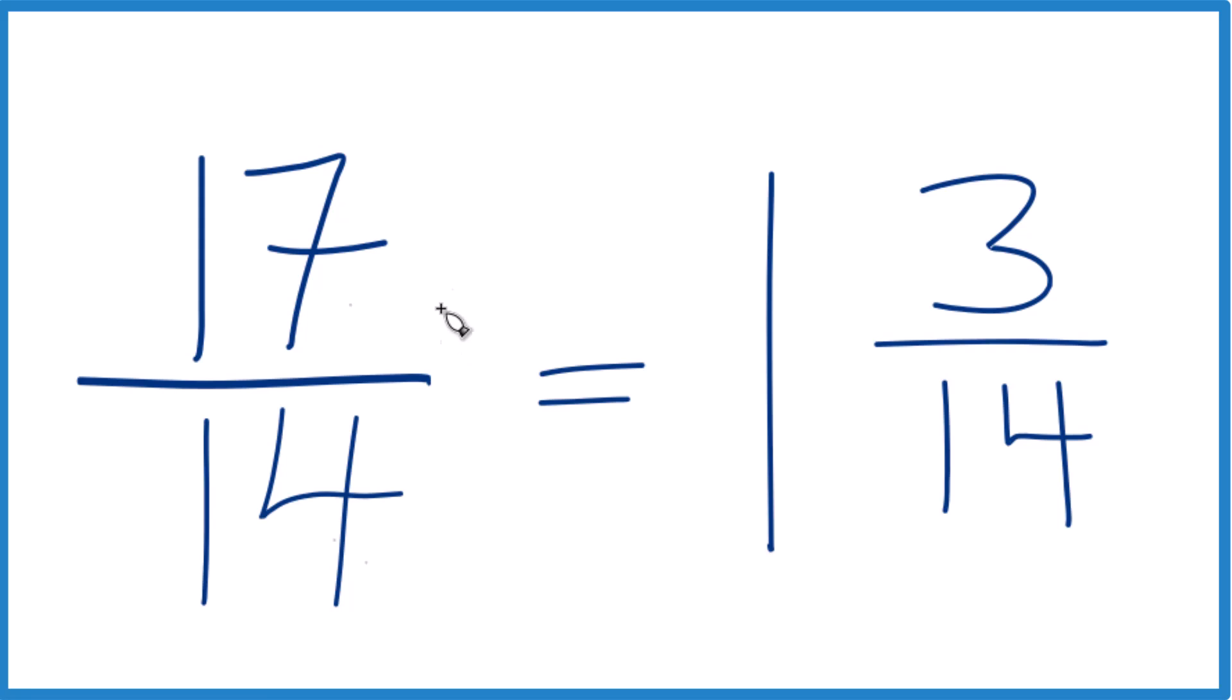That's how you do it. That's how you simplify 17 fourteenths. It's already simplified. And write it as a mixed number. It's Dr. B. And thanks for watching.